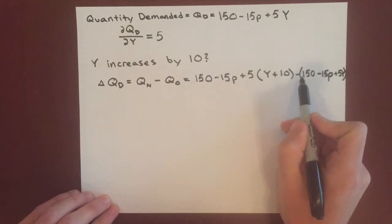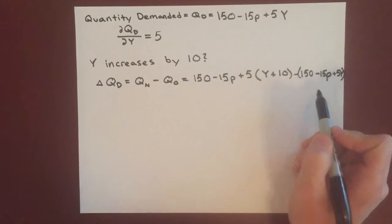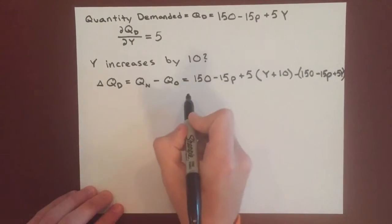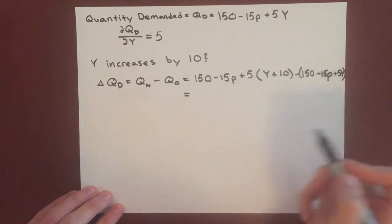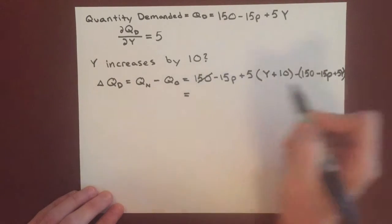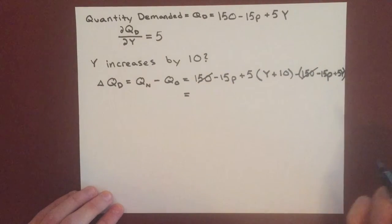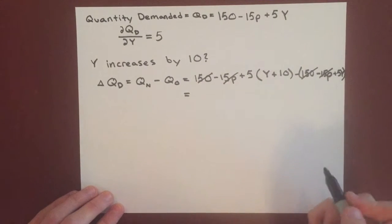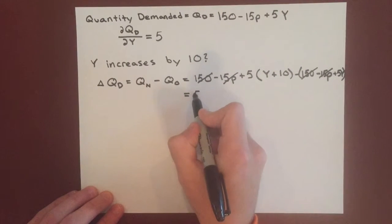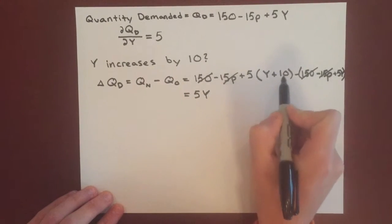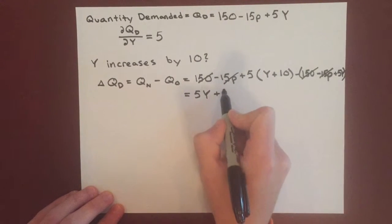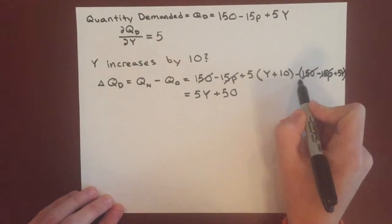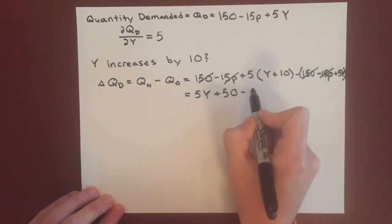And make sure you keep these parentheses, just to make sure that you carry this negative sign, that's going to be really important. So then we can start canceling some of these terms. The 150 cancels with this subtraction, same with the 15p. And so we wind up with, after distributing this 5, 5Y plus 50, and then distribute this negative minus 5Y.